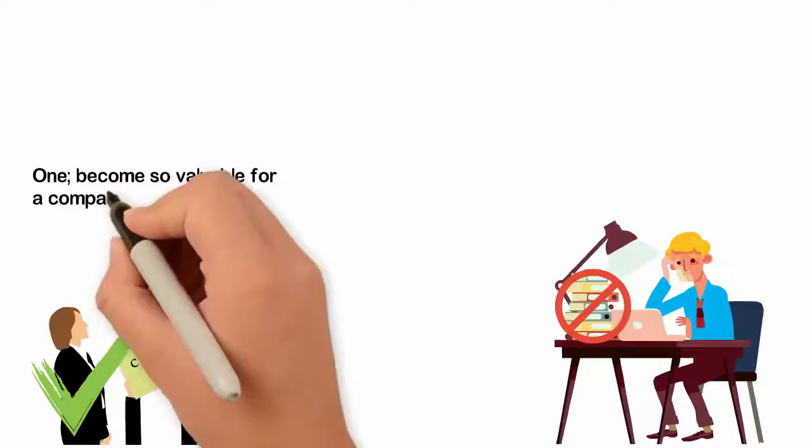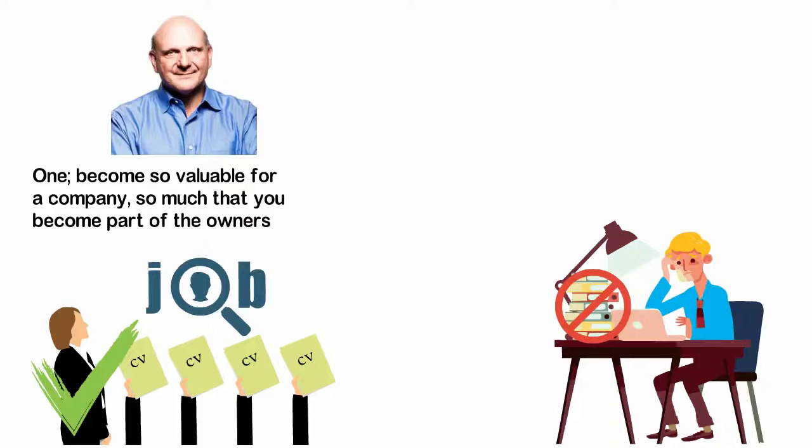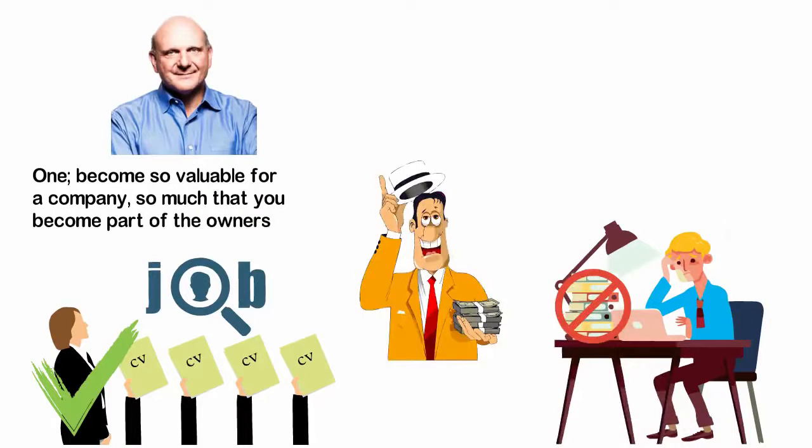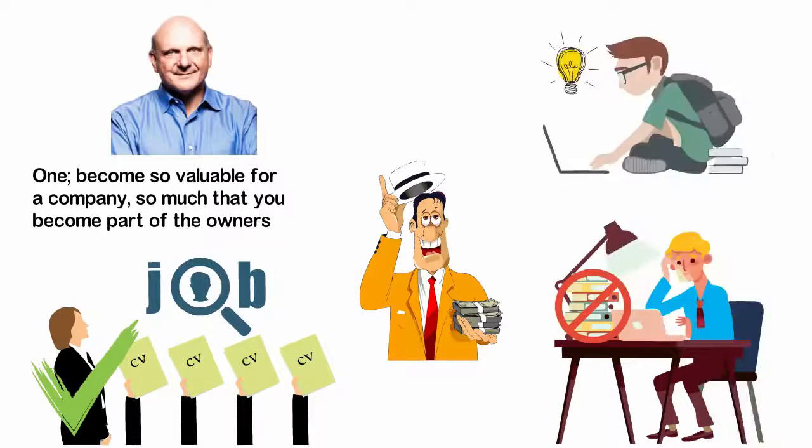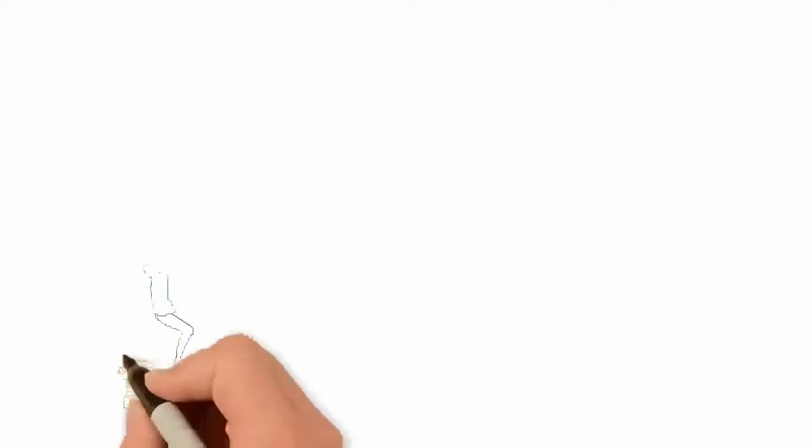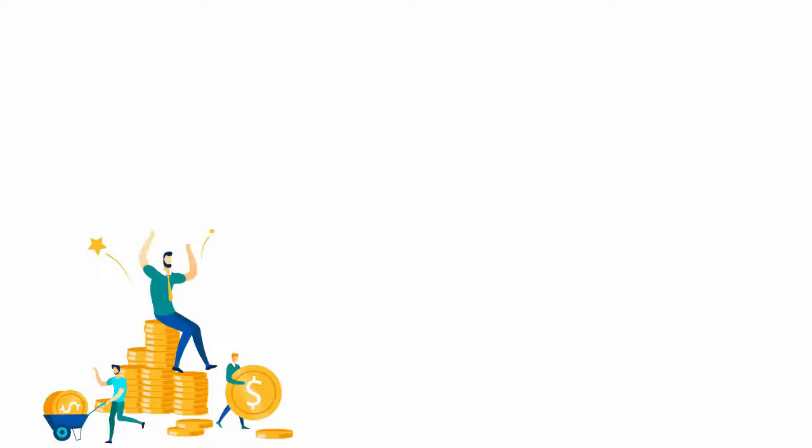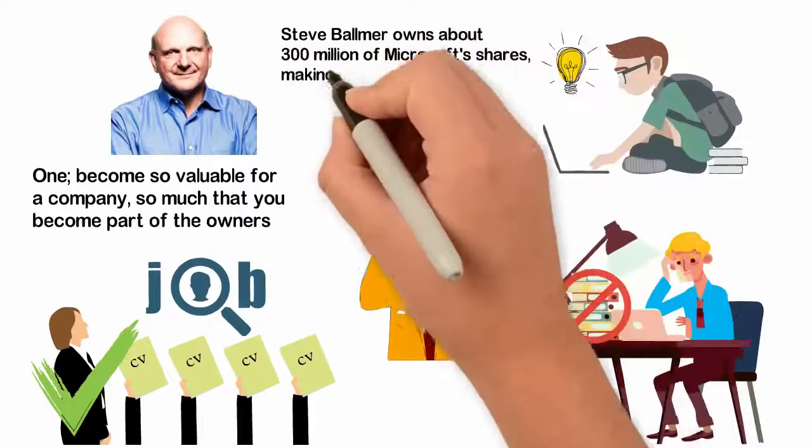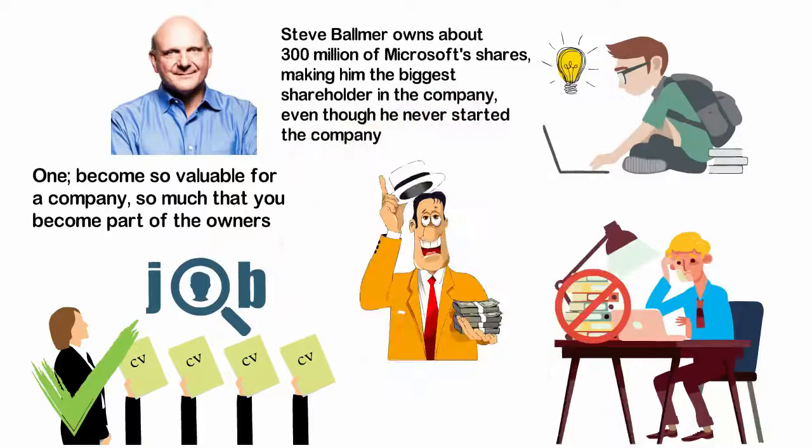Number one: Become so valuable for a company so much that you become part of the owners. For example, Steve Ballmer was not one of the founders of Microsoft, but today he had made billions of dollars from Microsoft. How did he do it? He was employed by Microsoft in the year 1980 and he proved himself to be worthy of becoming one of the owners. By the time Microsoft went public in 1981, he owned 8% of the company's shares. And today, Steve Ballmer owns about 300 million of Microsoft's shares, making him the biggest shareholder in the company, even though he never started the company.